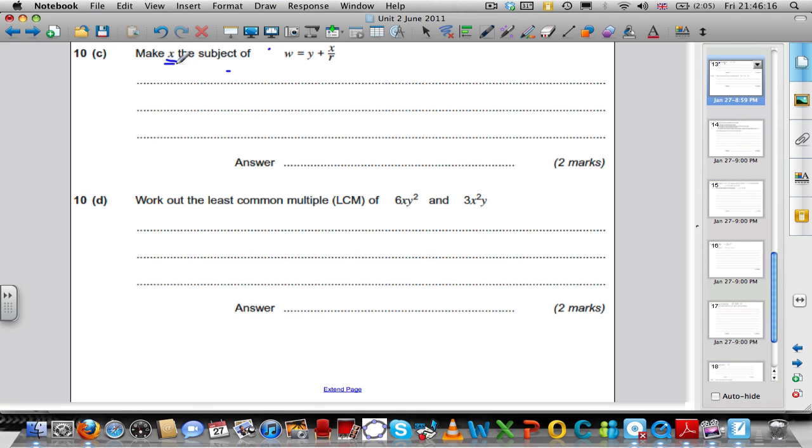We're going to make X the subject of the formula. That means we want an expression where X is on its own, on one side, and we show it equal to the other variables combined in some way. What happened to X in the first place? I had X. I would have had to divide it by R to get X over R. And, I would have had to add Y to get Y plus X over R. So, going backwards, to undo it, I'm going to subtract Y and I'm going to times by R. Let's subtract Y of both sides. We get W minus Y is equal to X over R. Then, I'm going to multiply both sides by R. That just leaves me with X on this side. Hence, X equals R multiplied by W minus Y.